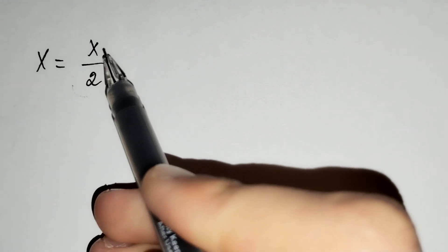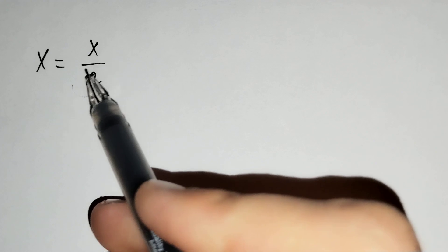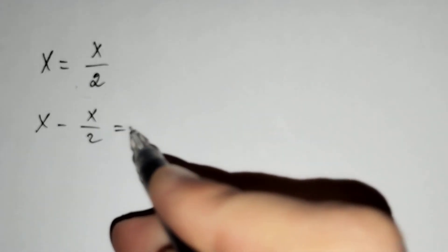Firstly, if we move to the other side of our equation x over 2, we get x minus x over 2 equals 0.